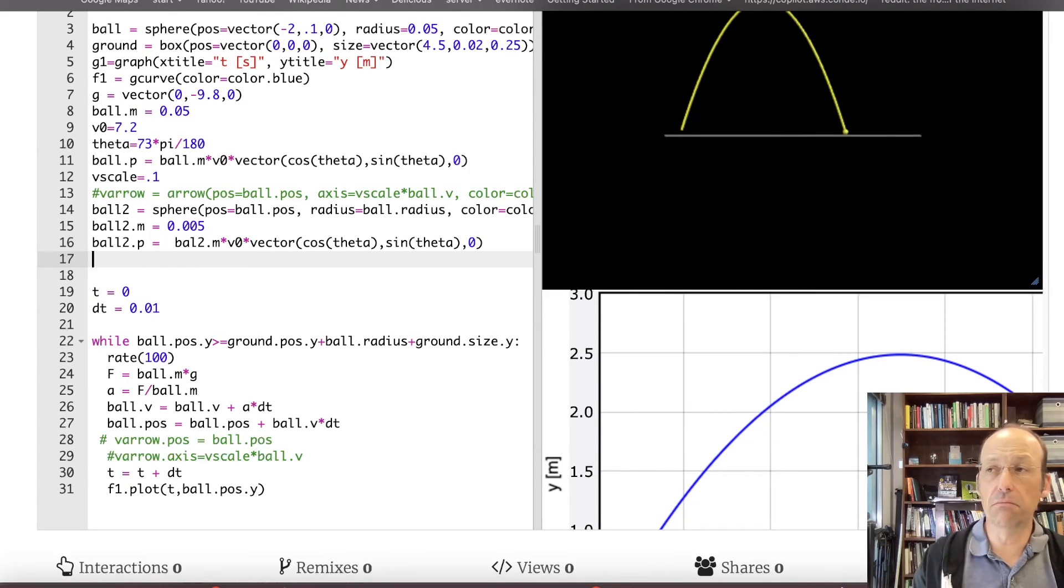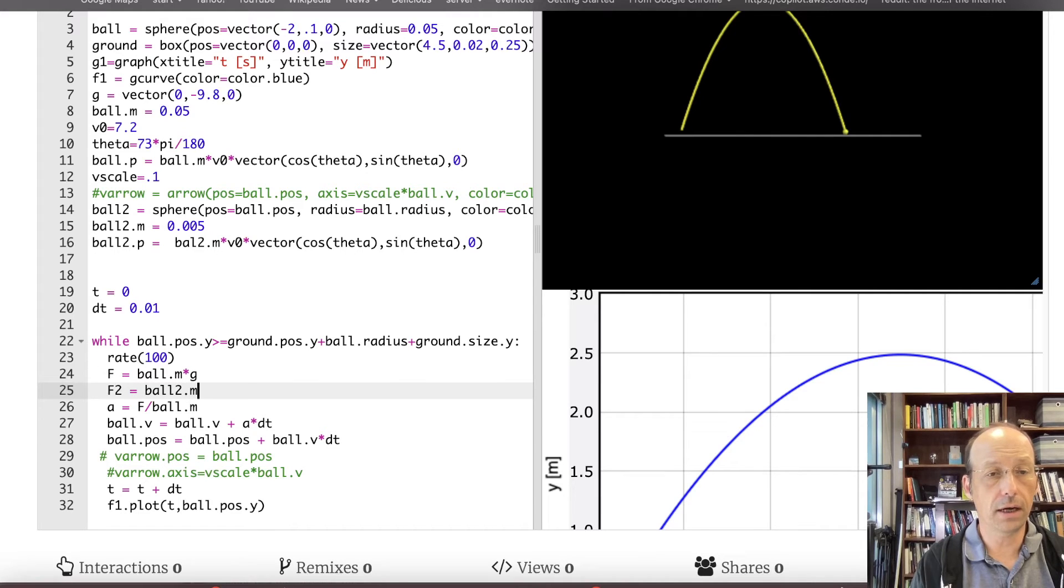Now down here I want to just make it with no air resistance, just so I make sure I'm doing everything right. So let's say f and then f2 is ball2 dot m times g. I don't need this acceleration. It changes to ball dot p, ball dot p plus f times dt. That's the net force on ball 1. And then down here I'm going to change this to ball dot p divided by ball dot m.